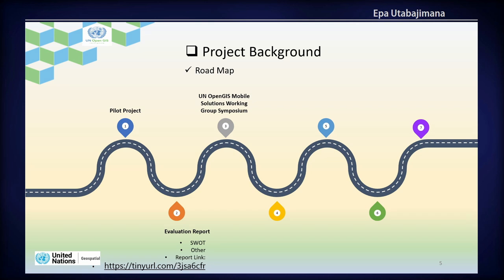One of the key recommendations was to have a centralized data server within UN premises, and this was accepted. A centralized infrastructure at the UN Global Service Center was established. That led us, again, to testing that centralized infrastructure to see whether this mobile data tool was working effectively.